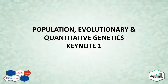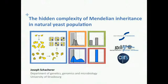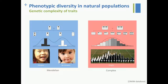Joseph Schacherer has come all the way from Strasbourg. Tonight he is going to talk about the hidden complexity of Mendelian traits — something they are trying to bring to light using yeast genetics.